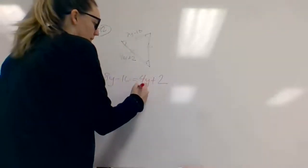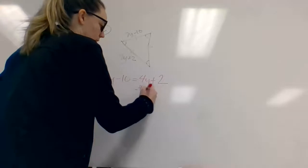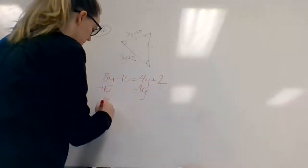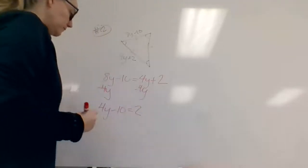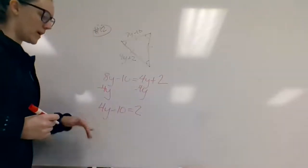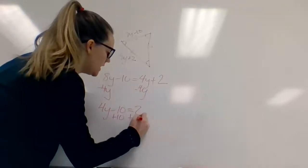I'm going to move my 4y first. In order to move it, I need to undo it. So 4y minus 10 equals 2. I moved my 4y, so now I need to move my other number, plus 10.